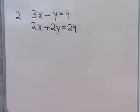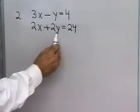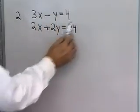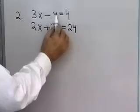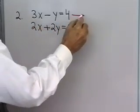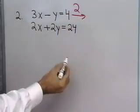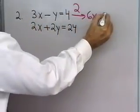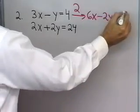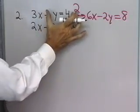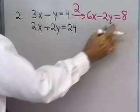3x minus y is equal to 4, and 2x plus 2y is equal to 24. If I add them as they are, nothing will be eliminated. But if I multiply the top equation by 2, I'll end up with 6x minus 2y is equal to 8. That uses the multiplication property of equality.